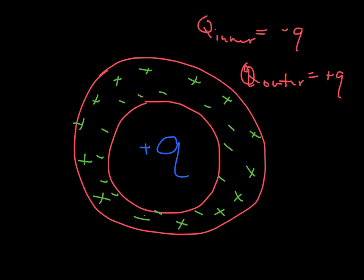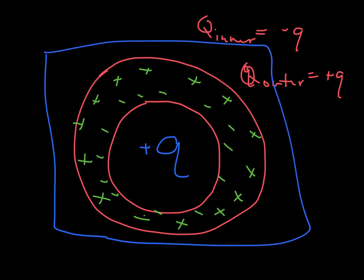So to an outside observer, someone way over here, all they see is a box with Q. It doesn't matter if it's a circle, it doesn't matter what exactly it looks like. Your inner surface will always have minus Q, your outer surface will always have plus Q.